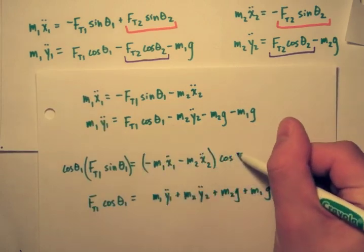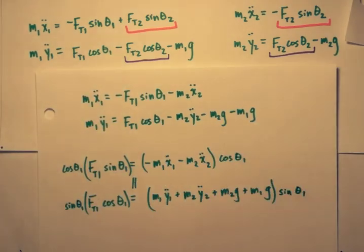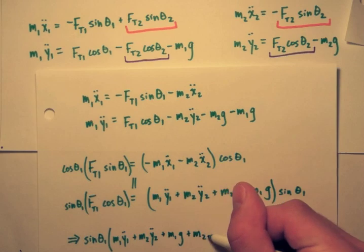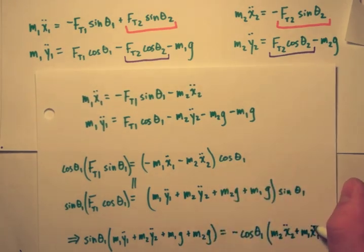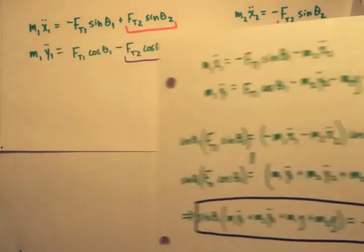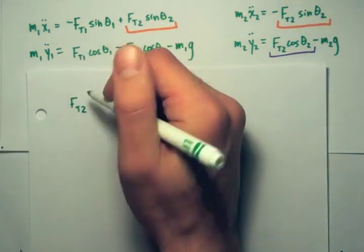To equate these, we're going to multiply the first one by cosine theta 1 and the second one by sine theta 1. Then they're equal to each other, and we can take out the force of tension and we get one differential equation there.